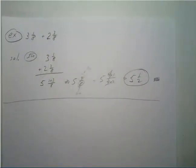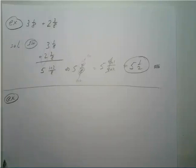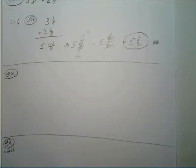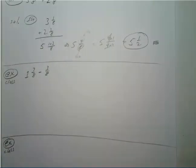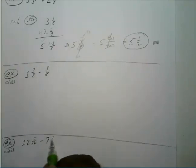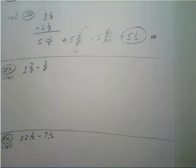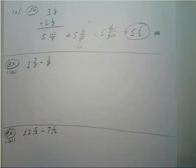For our next examples, I'll give you two problems and I want you to solve both of them. What if we have one and seven-eighths minus three-eighths, and what if we have twelve and five-twelfths minus seven and one-twelfth? Go ahead and press pause and try to solve both of those on your own. I'm assuming you've pressed pause and solved both — let's go ahead and verify your answers.